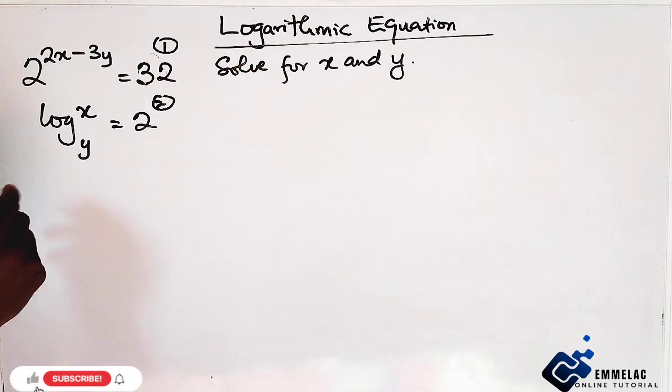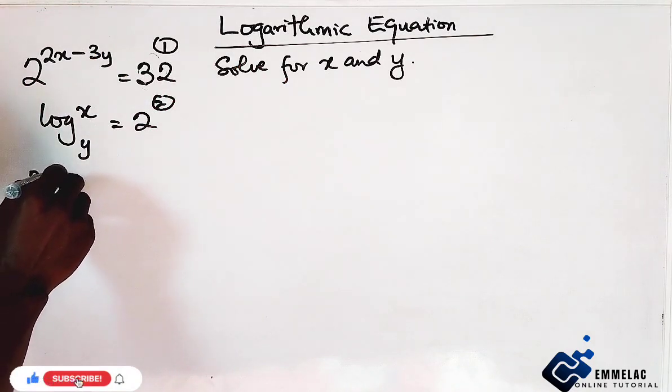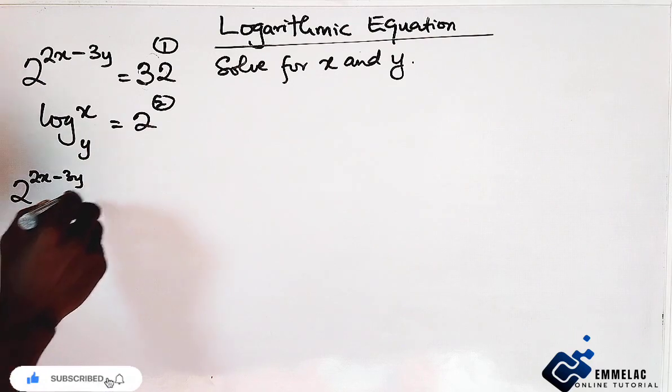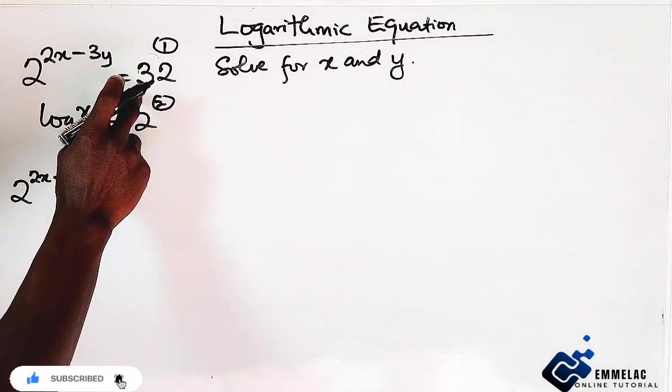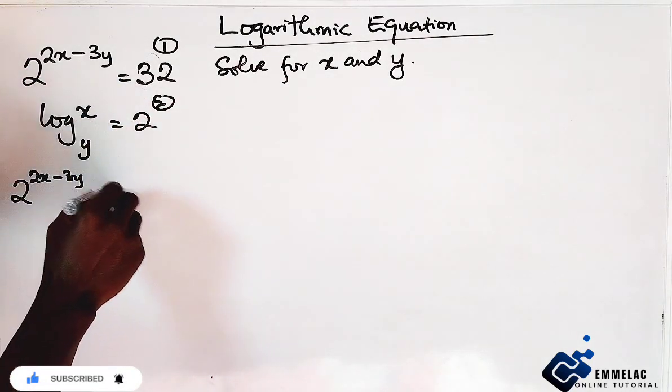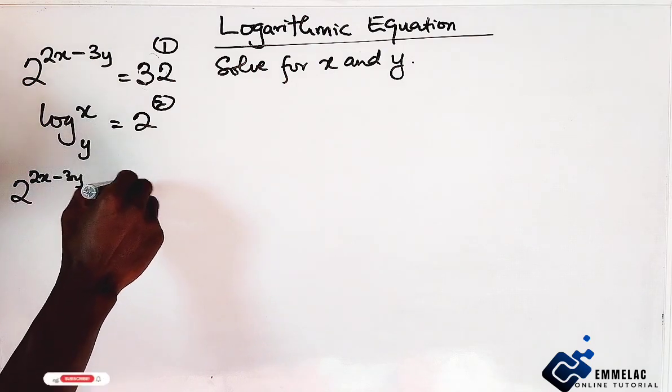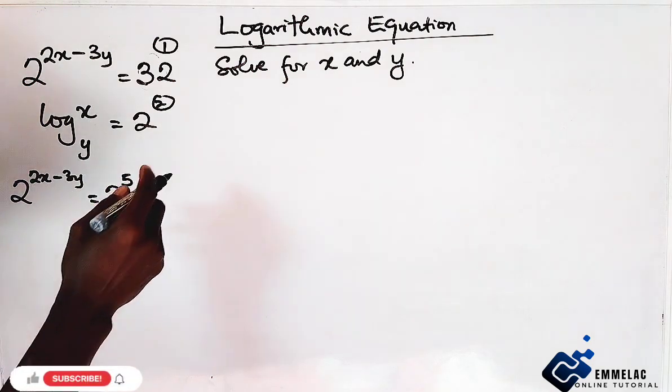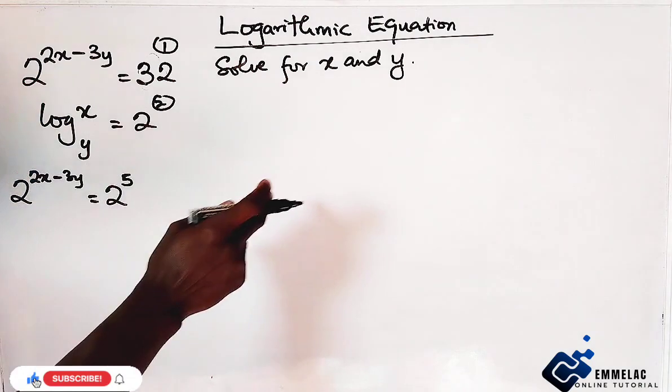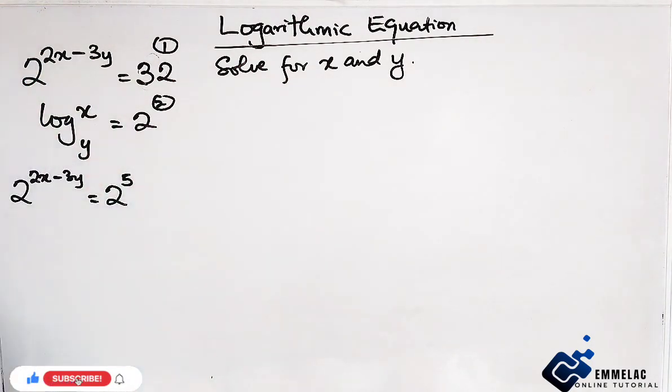Just change this to a base of 2 and by doing that we have 2 raised to the power of 2x minus 3y on the left hand side. Now, changing this to the base of 2, here we have 2 raised to the power of 5. Because 2 times 2 in 5 places will give us 32.